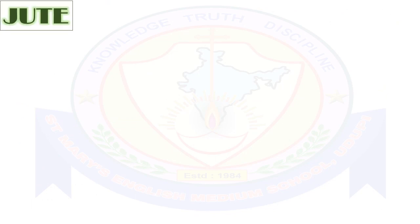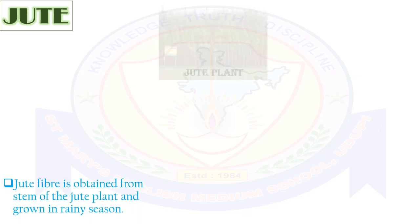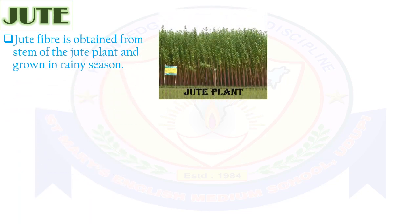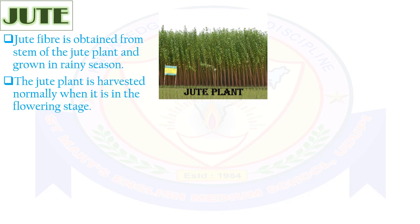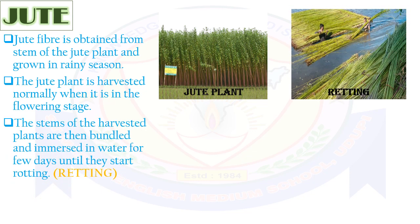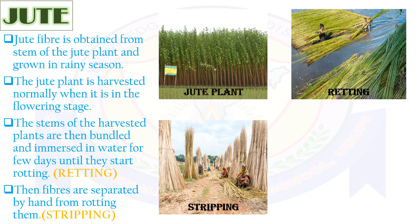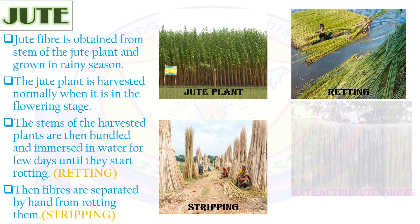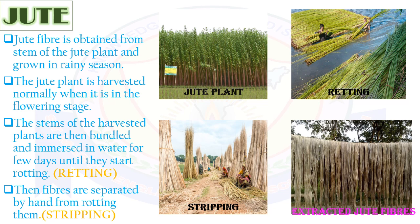Now we will study another important plant fiber — jute. Jute fiber is obtained from the stem of the jute plant and is grown in the rainy season. The jute plant is harvested normally when it is in the flowering stage. The stems of the harvested plants are then bundled and immersed in water for a few days until they start rotting — this process is called retting. Then the fibers are separated by hand from the rotted stems — this process is called stripping. This is how jute fibers are extracted.